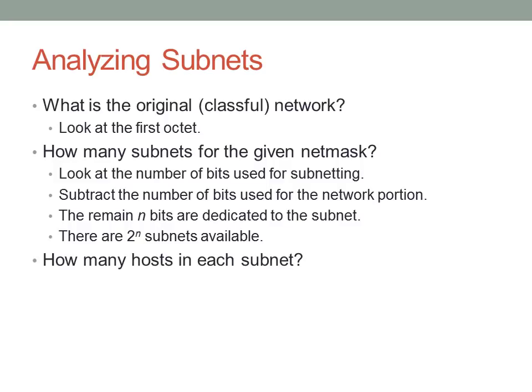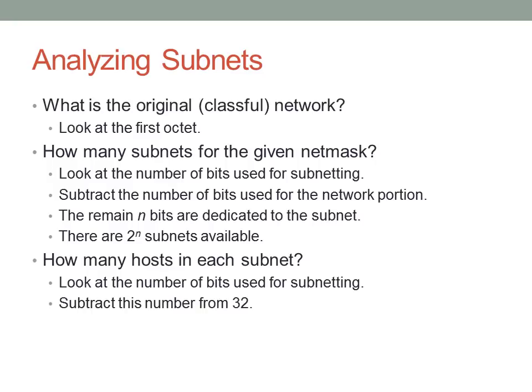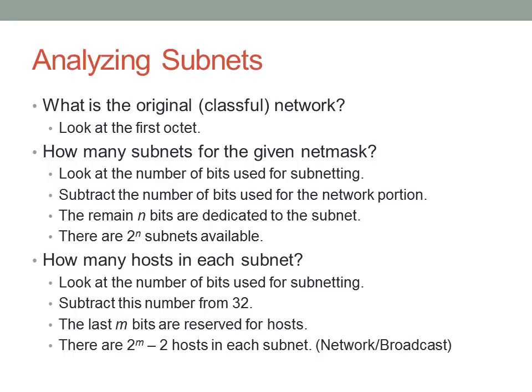The last thing to look at when analyzing subnets is how many possible hosts can be contained on each subnet. We look at the number of bits in the subnet mask and subtract from 32. The remaining m bits are reserved for hosts. In this case, we actually have to subtract 2, because of the special addresses we talked about: the network address at .0, and the broadcast address at .255.